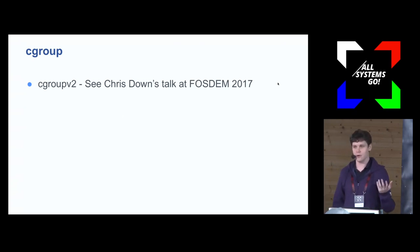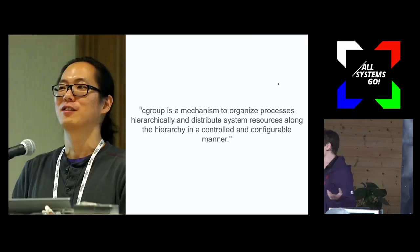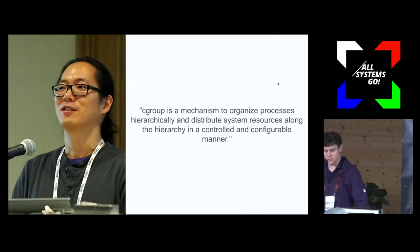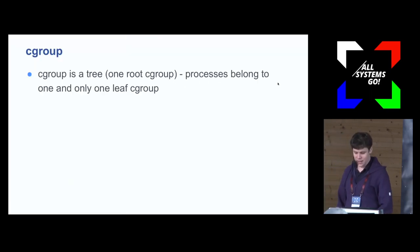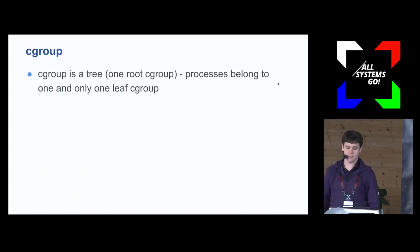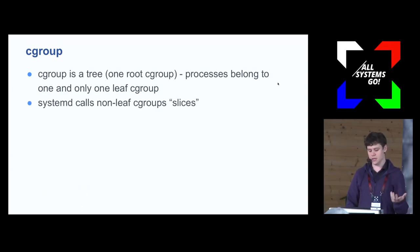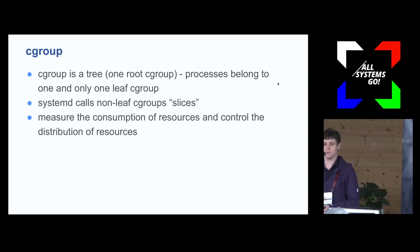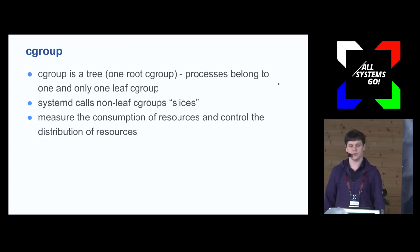Tejan refers to cgroup as a mechanism to organize processes hierarchically and distribute system resources along this hierarchy. Cgroup is a tree: you have one root cgroup and can have children. Processes belong to one and only one leaf cgroup. SystemD calls non-leaf cgroups slices. Each cgroup can be used to measure the consumption of resources — CPU, memory, IO — and you can also control the distribution of resources by setting limits and other configuration at various points in the tree.